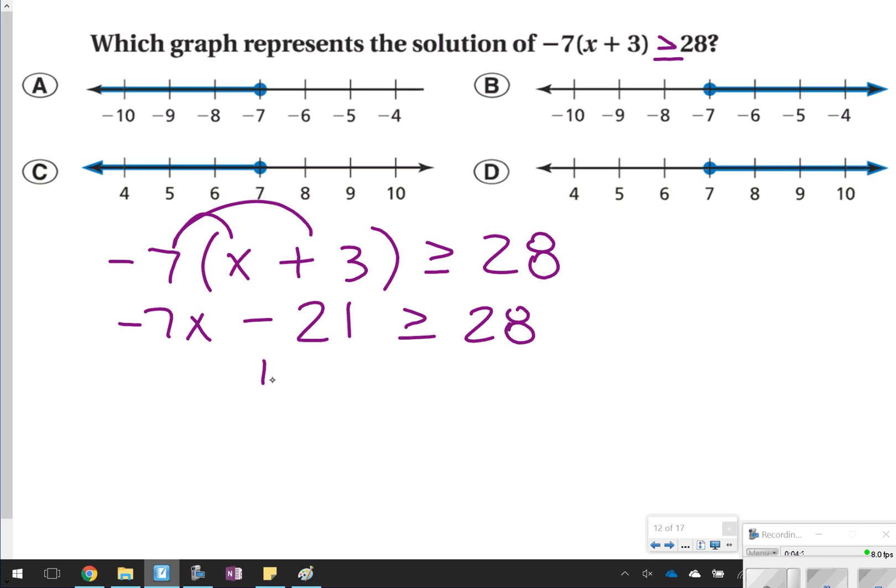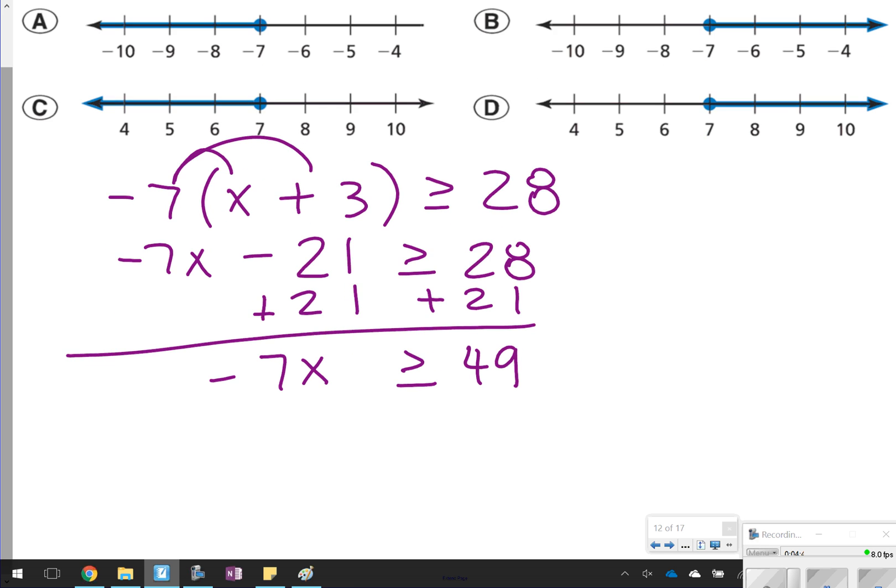I'm going to add 21 to both sides, and I'm going to get 49 is greater than or equal to negative 7x. And then I do have to divide by negative 7, and because I'm dividing by negative 7, I'm flipping the sign to be less than or equal to, so x is less than or equal to negative 7. So the graph I would choose would be option A. That's a closed circle pointing to the left over negative 7.